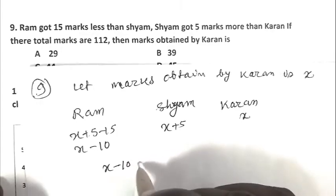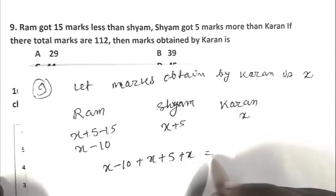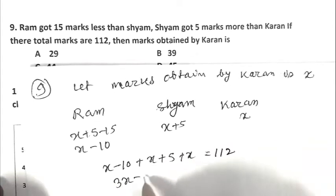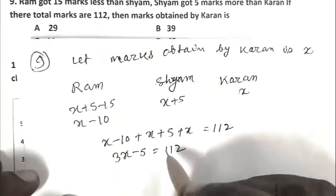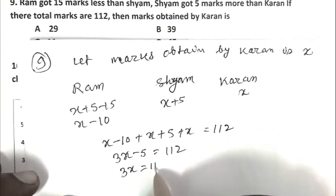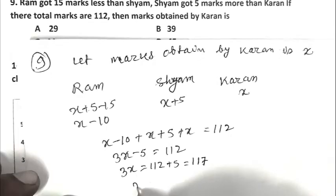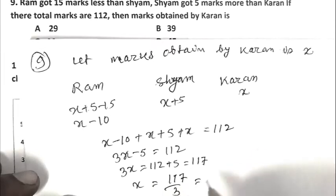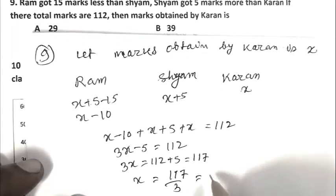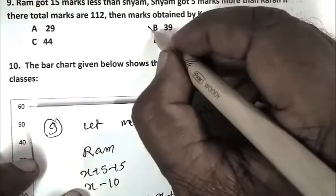According to the question, adding their marks: X minus 10 plus X plus 5 plus X equals 112, or 3X minus 5 equals 112. So 3X equals 117, and X equals 117 upon 3, that is 39. B is the right answer.